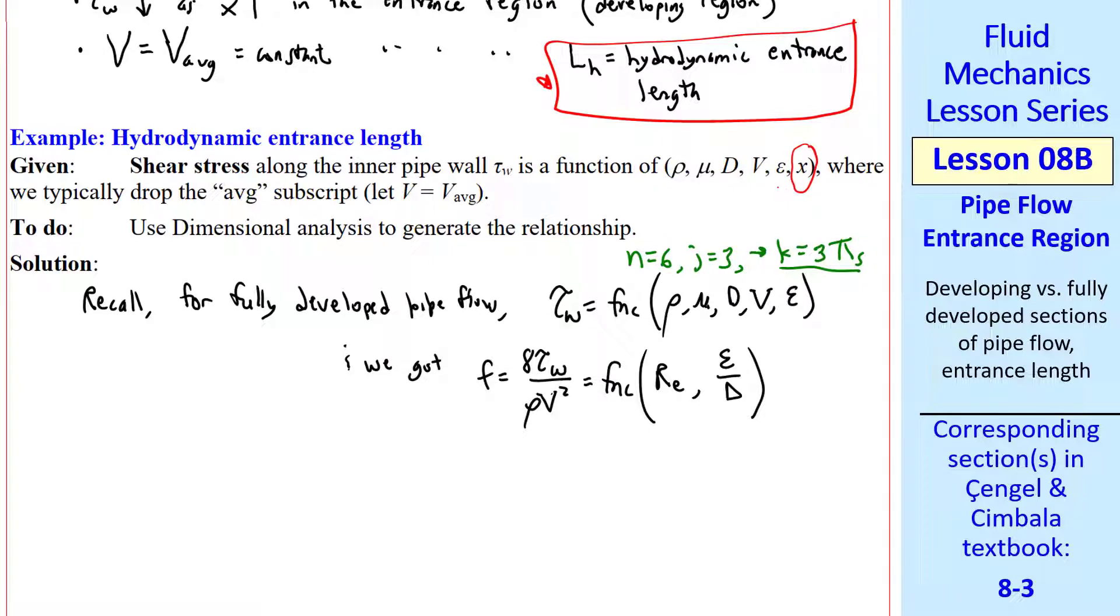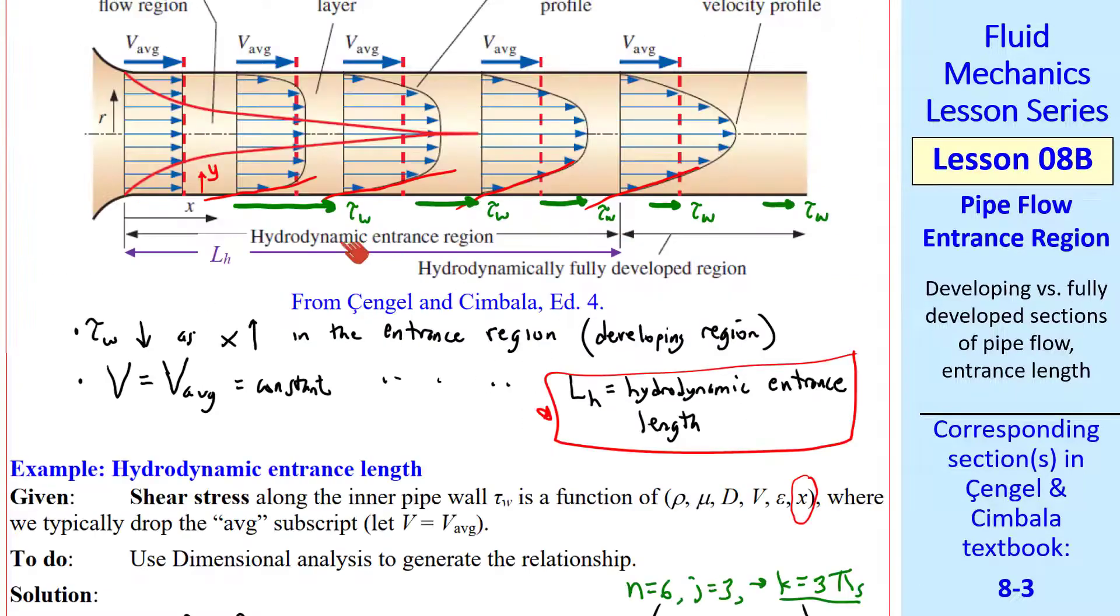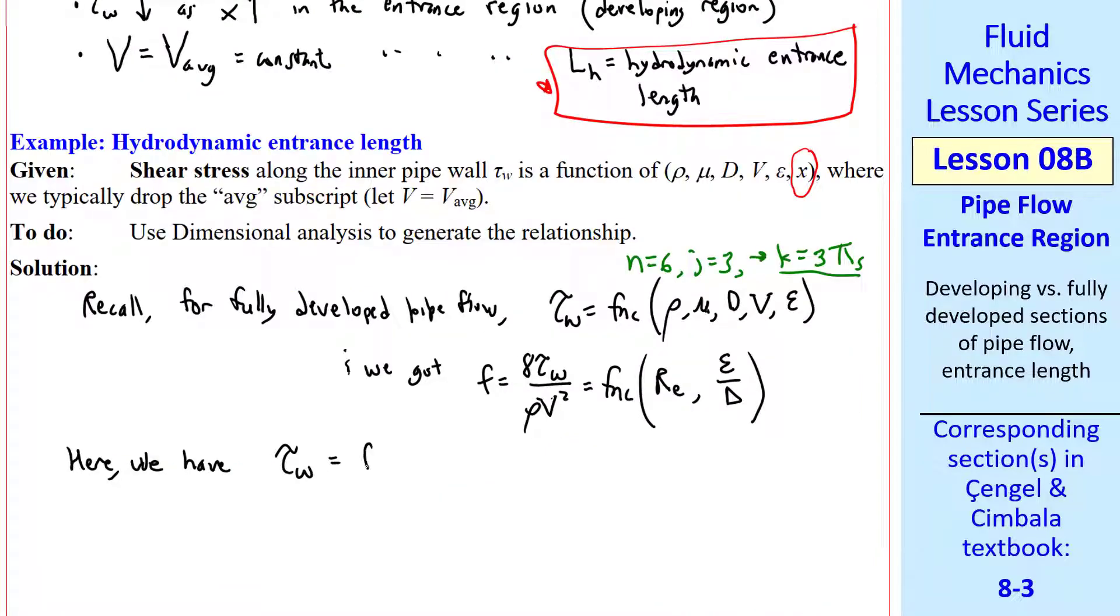Now we add x to our list of independent variables. Since tau_w for the entrance length depends on x as I've shown here. So here we have, tau_w is a function of rho, mu, d, V, epsilon, and x.